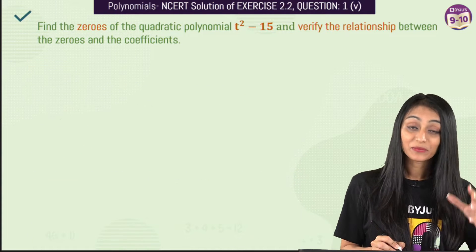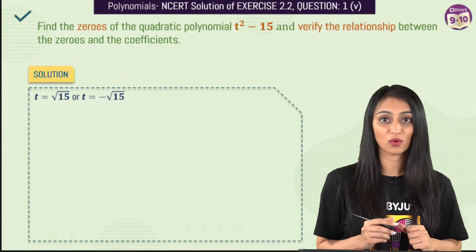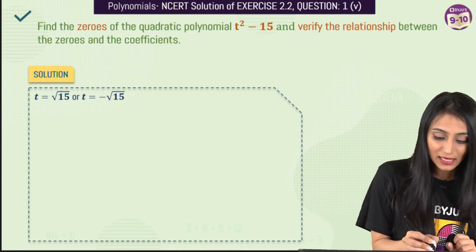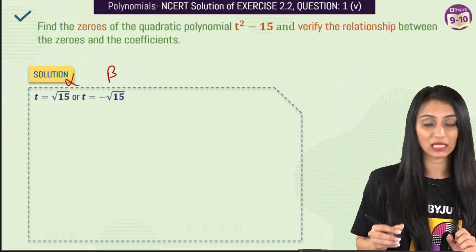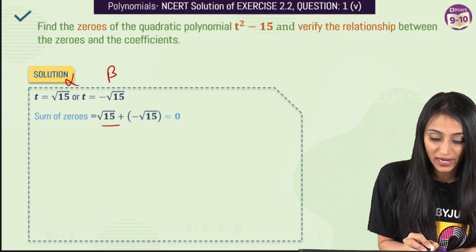Now for the next part of the question, which asks to verify the relationship between zeros and coefficients. These zeros are actually alpha and beta. First, I'm going to find the sum of zeros, which is alpha plus beta.